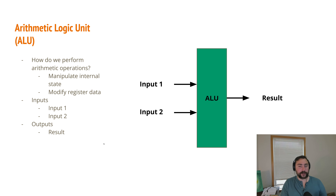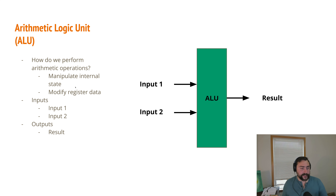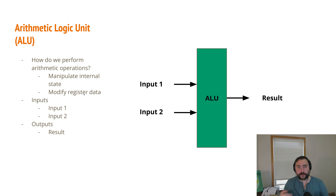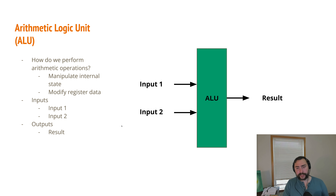We also have helper components sprinkled around the architecture to perform core small operations. At the very core is the arithmetic logic unit, or ALU. We use it for manipulating internal state — for example, incrementing the program counter to move to the next instruction even without any branches or jumps. We also use it for instructions like ADD or multiply. Our inputs are two values going into the ALU, and the output is the result of whatever arithmetic operation we told the ALU to perform.